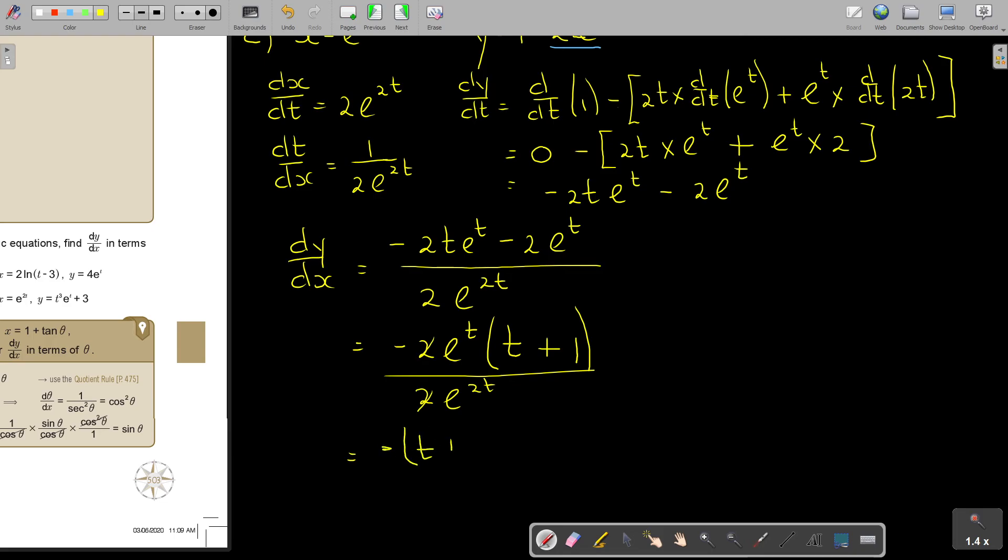So I will be left with, you can put the negative there, t plus 1. And at the bottom, one of these t's will, so it's e to the power of t. You can leave it like this.